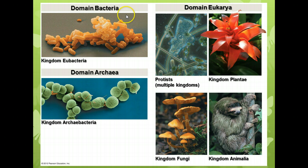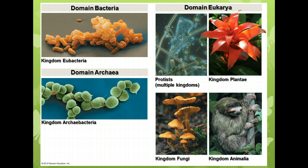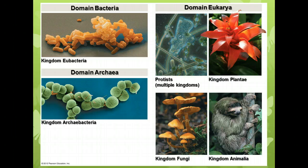Here we have domain bacteria, composed of kingdom eubacteria. This is a common kind of bacteria — probably E. coli — a common rod-shaped bacterium found in your intestine and the intestines of most mammals and many other organisms. Domain archaea, kingdom archaebacteria — these are less common, found usually in very extreme environments. This is a particular kind called the cyanobacterium, which is also photosynthetic. There are some eubacteria that are photosynthetic as well.